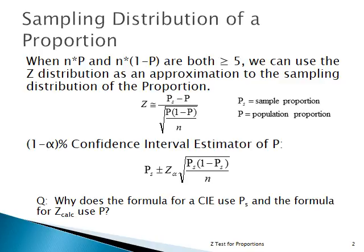Therefore, we can use the formula for Z to convert the sample proportion, a random variable, to a Z statistic.